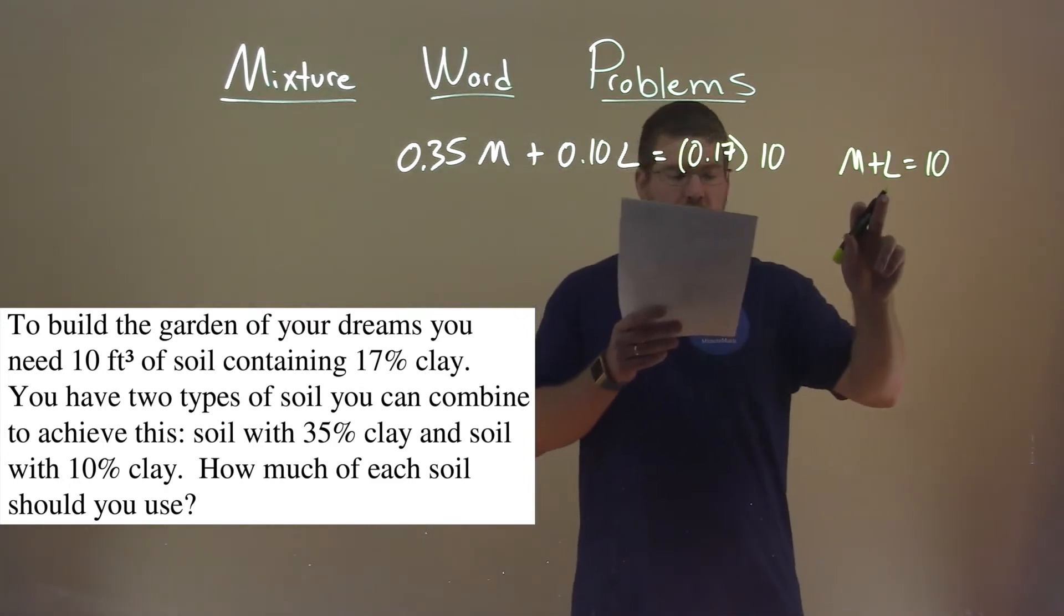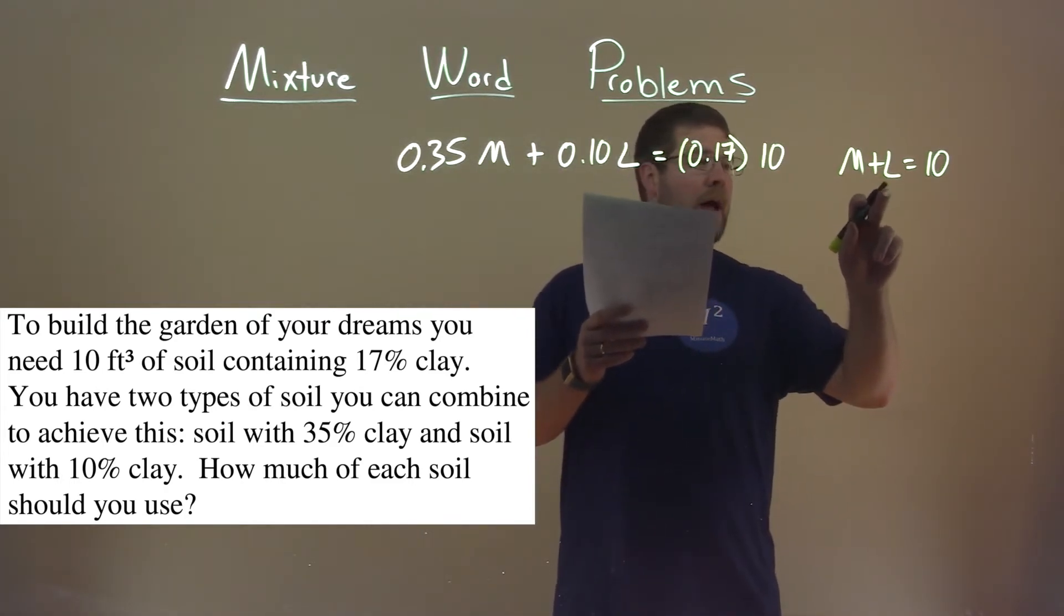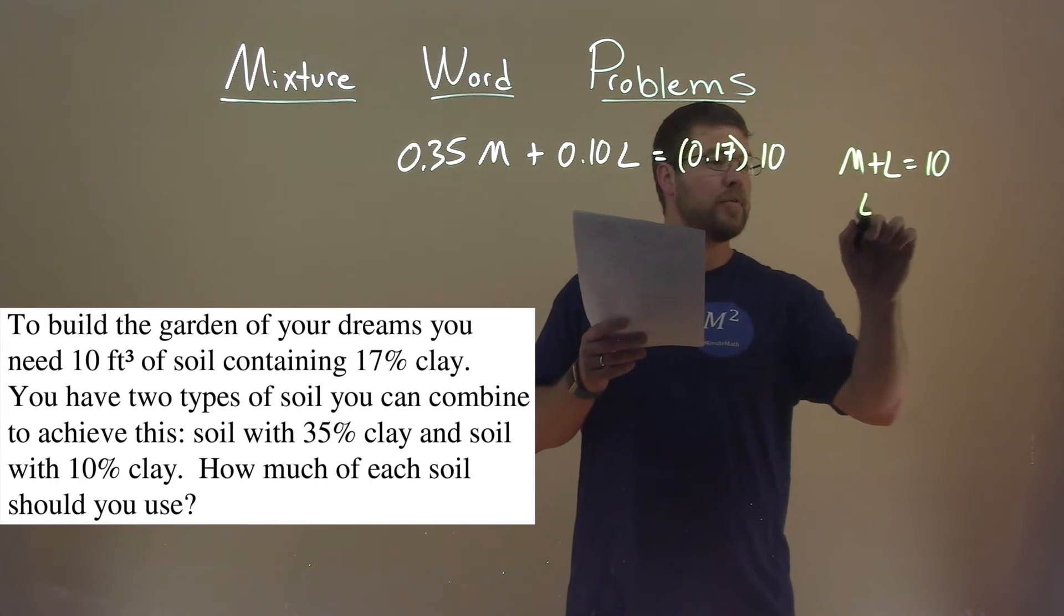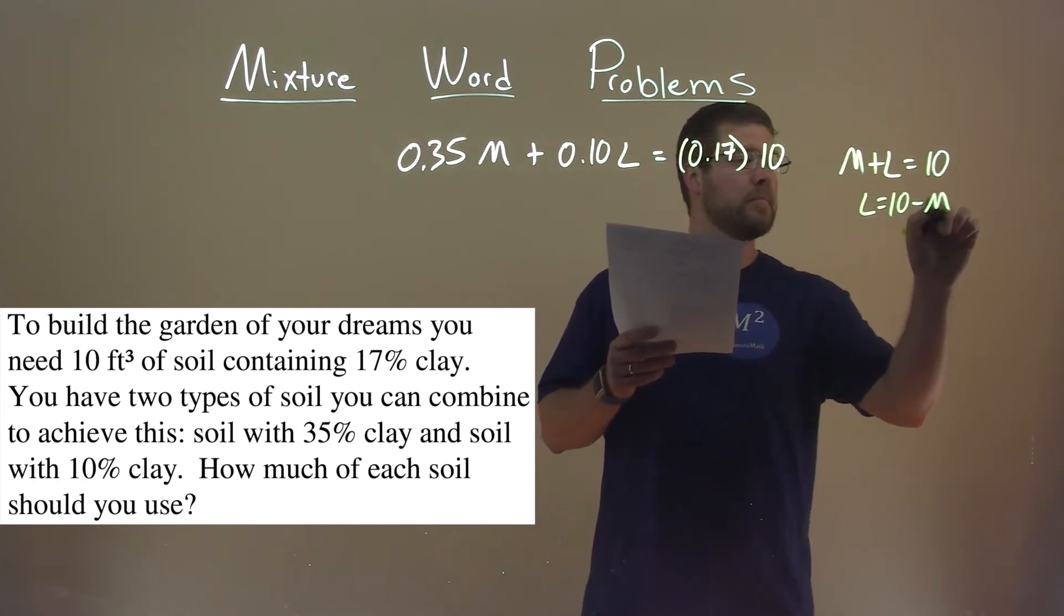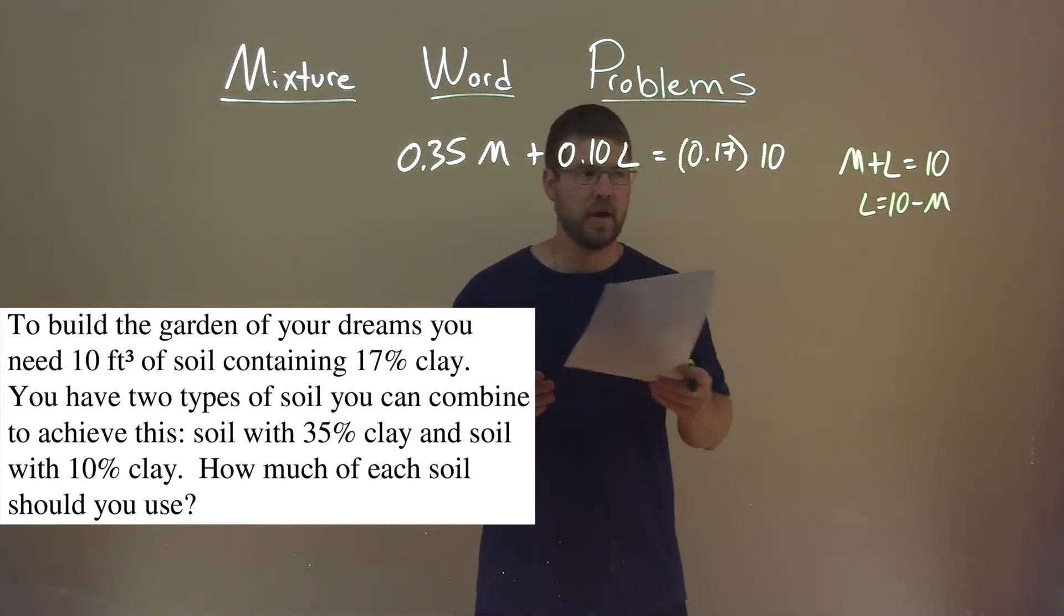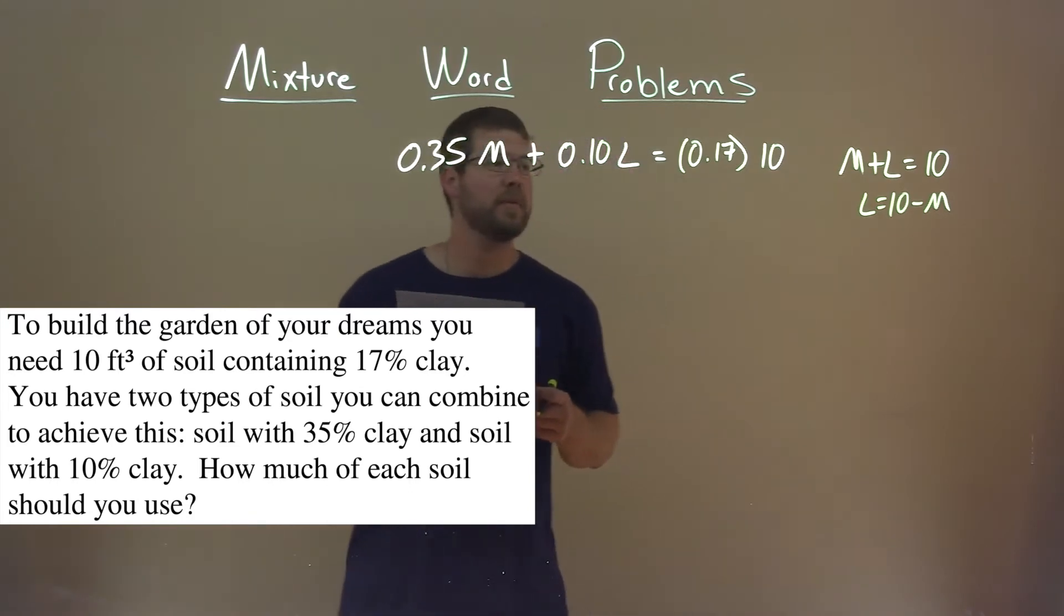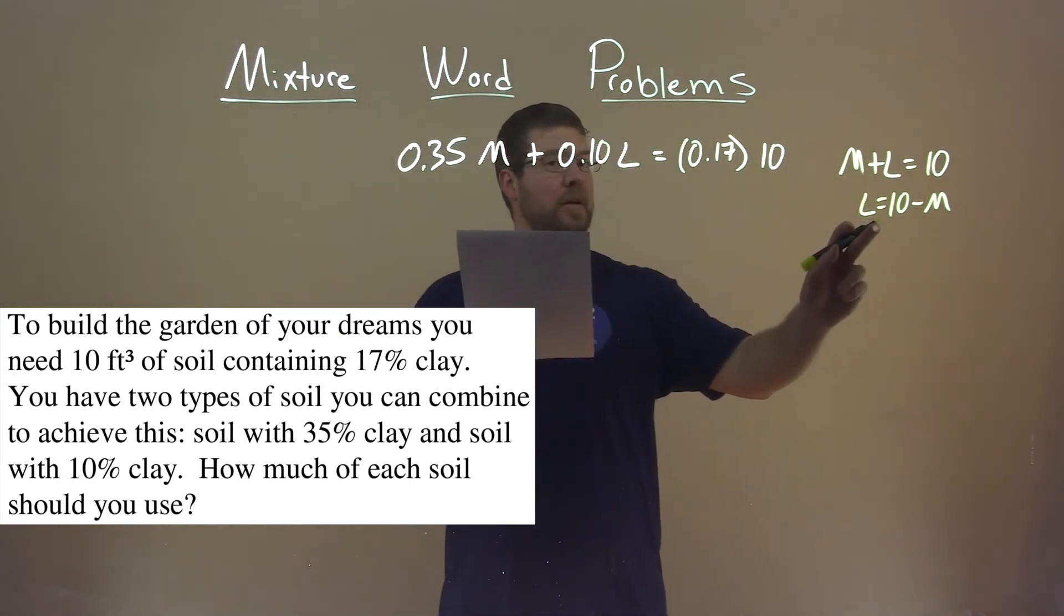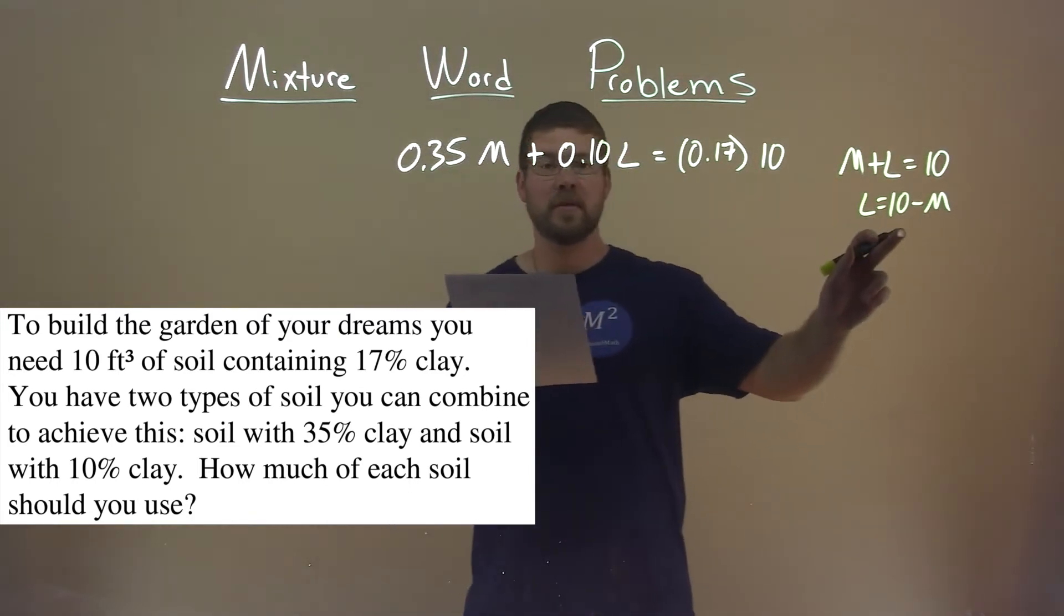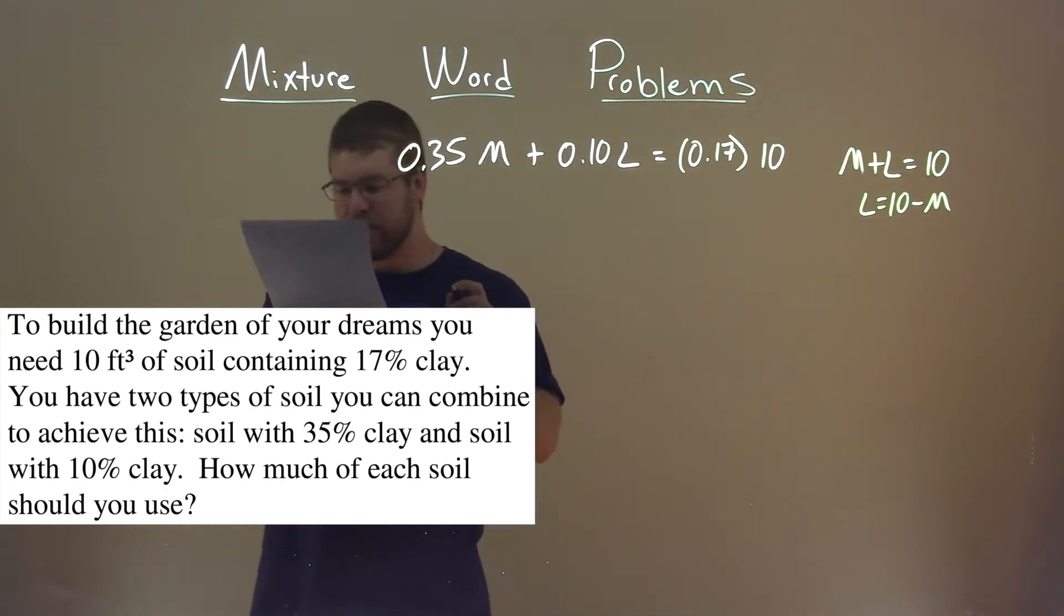Well, this equation, let's get L by itself. So L is equal to 10 minus M, just subtracting M to both sides. So what I'm going to do now, actually, is I'm going to replace this variable L, I'm using substitution, with 10 minus M.